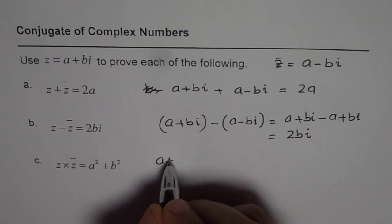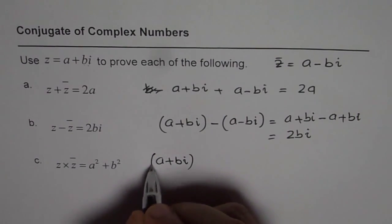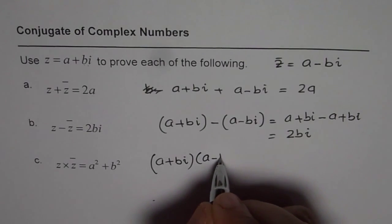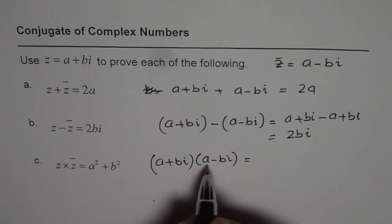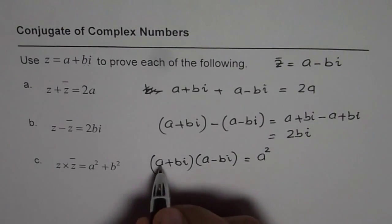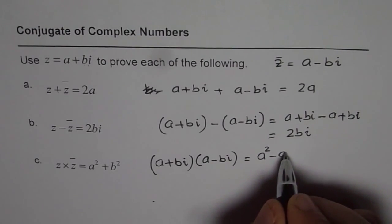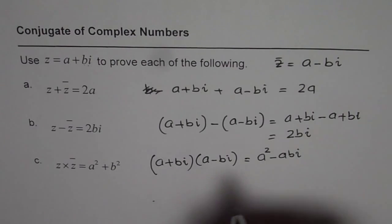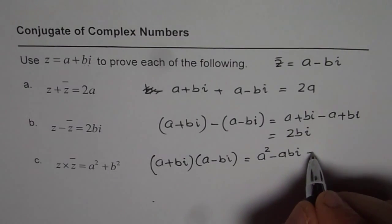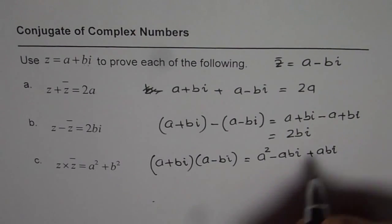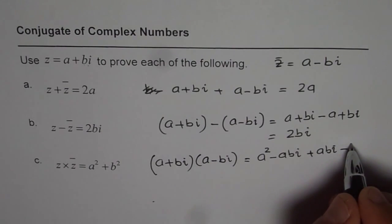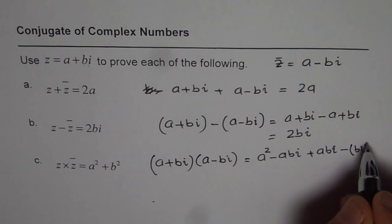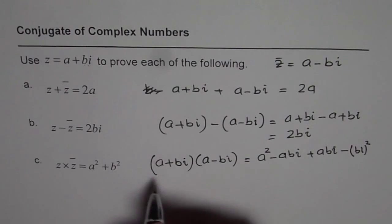So we have a plus bi times a minus bi. So let us apply the distributive property. So a times a is a square, a times minus bi is minus abi, then bi times a will be plus abi, and bi times minus bi will be minus bi whole square. Now we can simplify this.